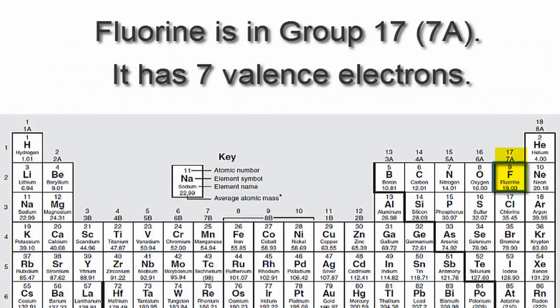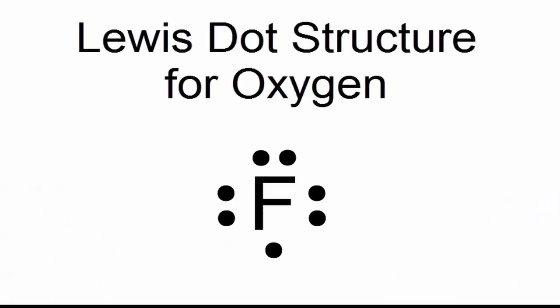Fluorine is in group 17 or 7A, so it has seven valence electrons. So we'll put the fluorine in the center, surrounded by seven valence electrons.